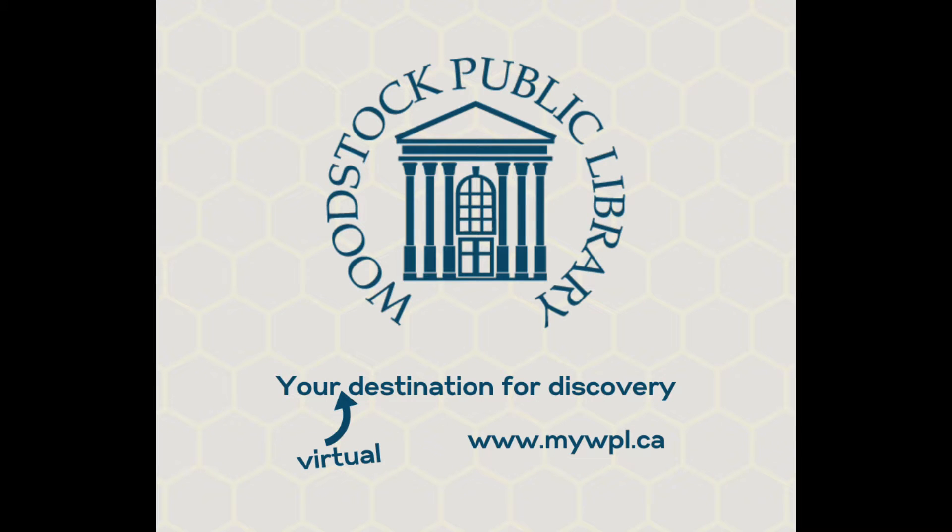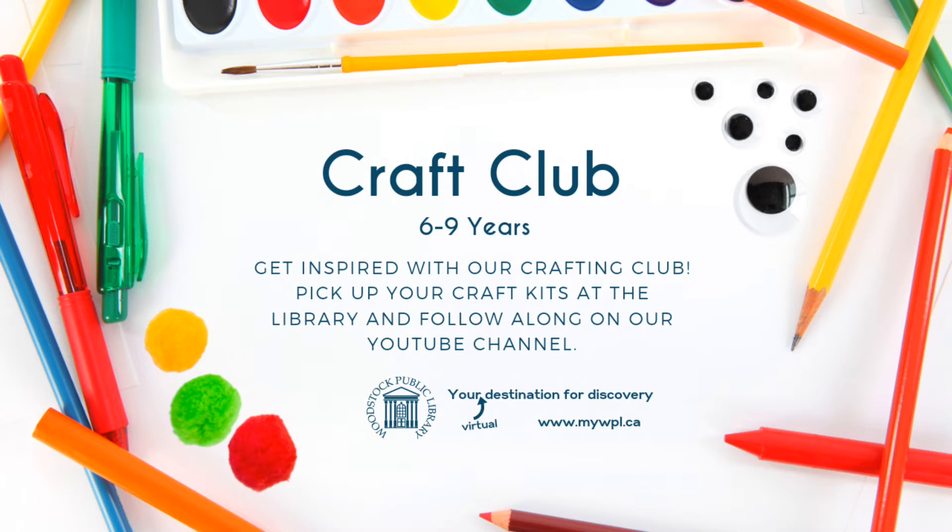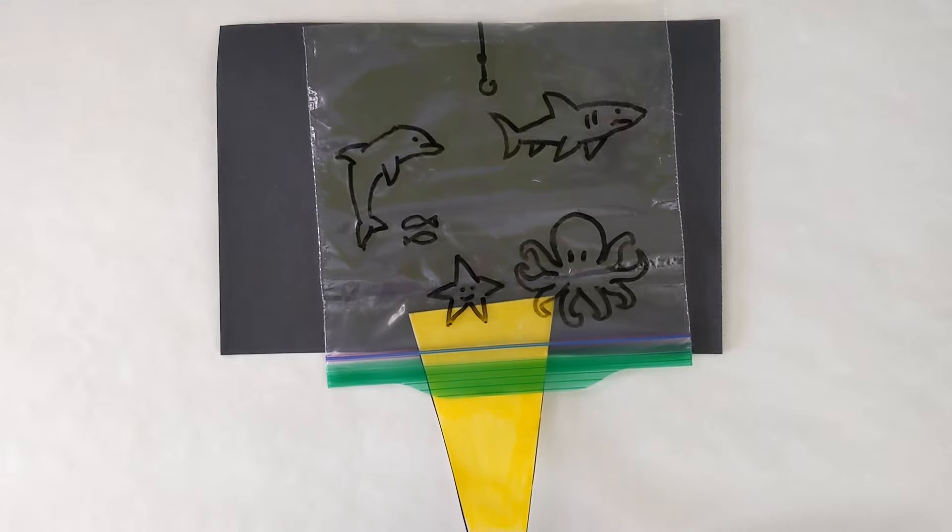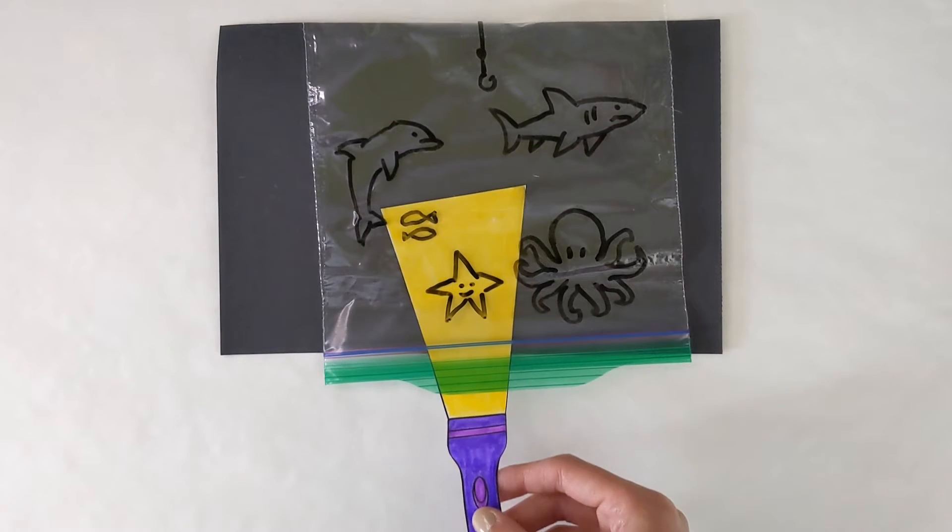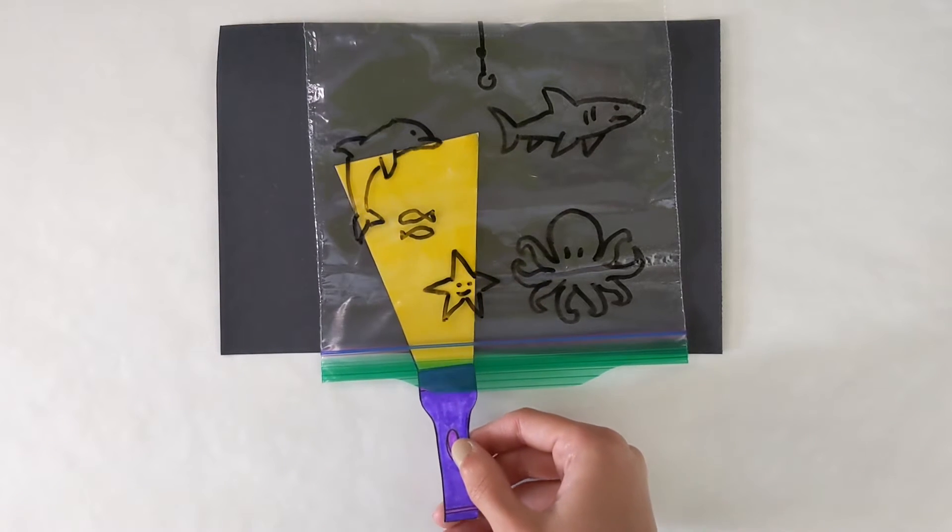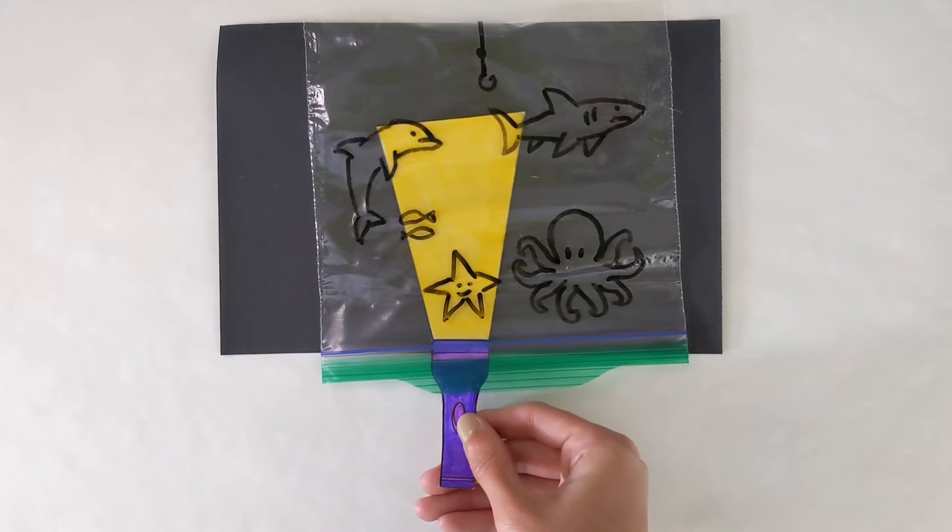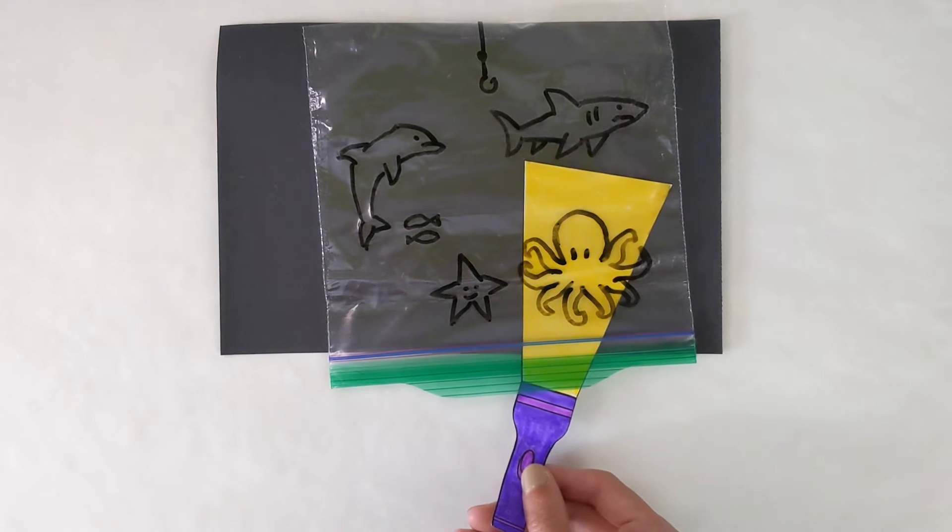Hello everyone and welcome to Craft Club. My name is Amy and today we are going to be making a craft together. That craft is a flashlight scene, just like the one you can see here, where you use your craft flashlight to find some animals.